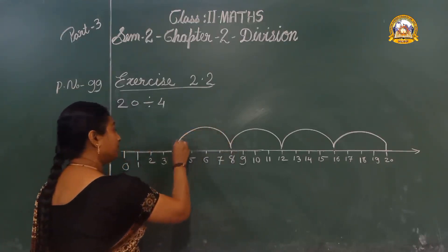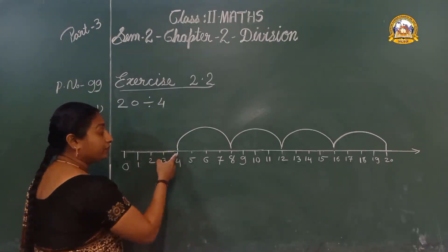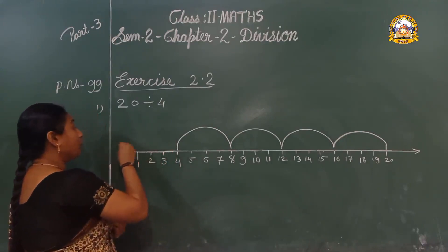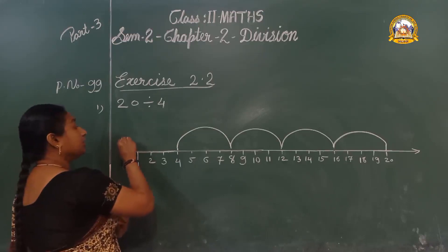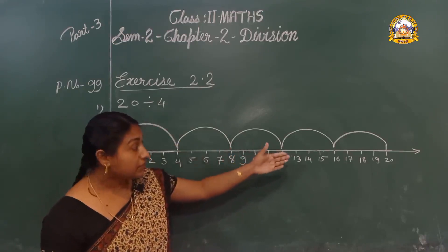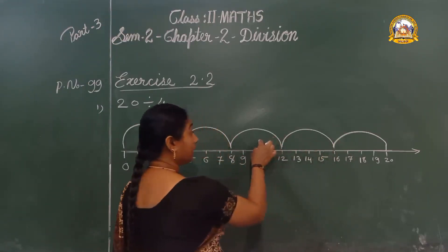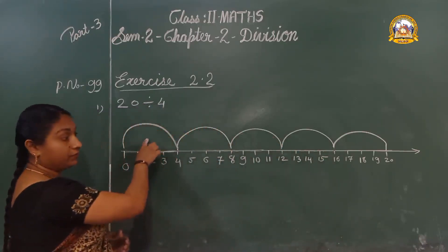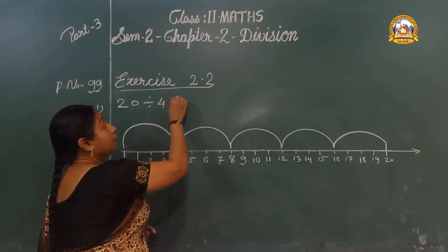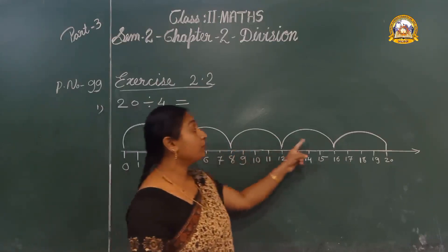Next jump, and again backwards, 4 steps. Before 4: 1, 2, 3, 4 — now we have reached 0. How many jumps are there? 1, 2, 3, 4, 5. So 20 divided by 4 is 5.